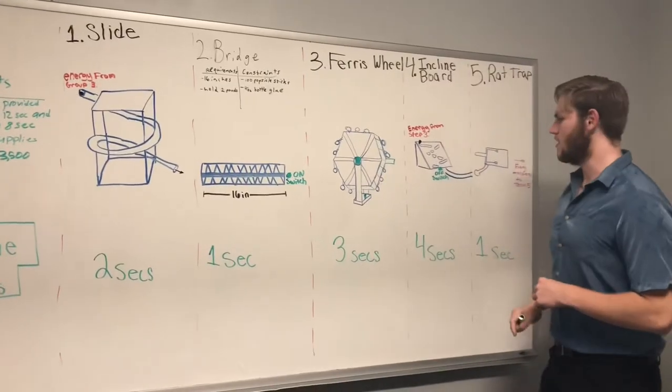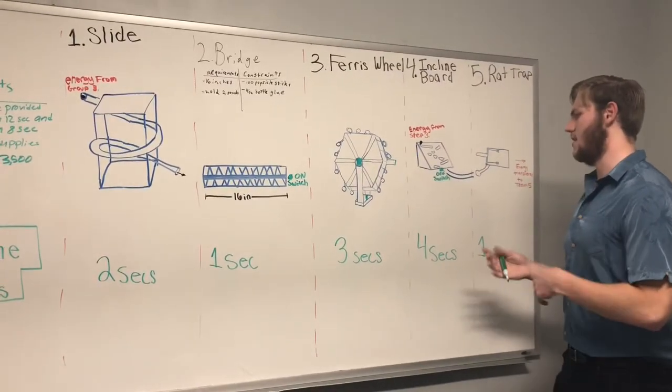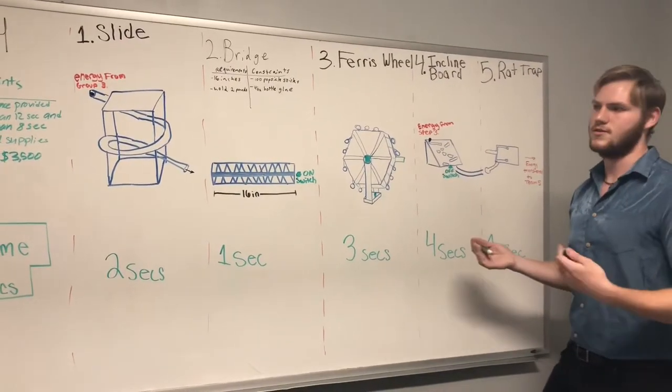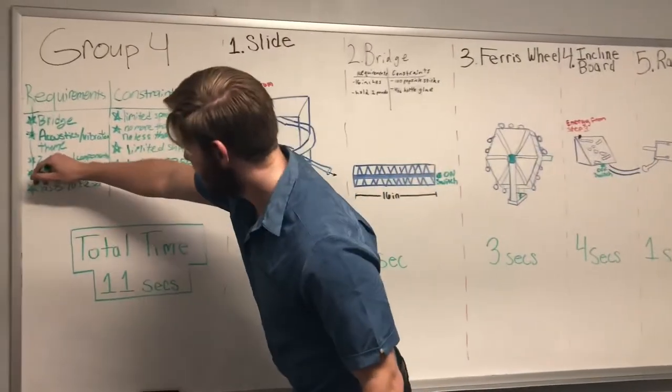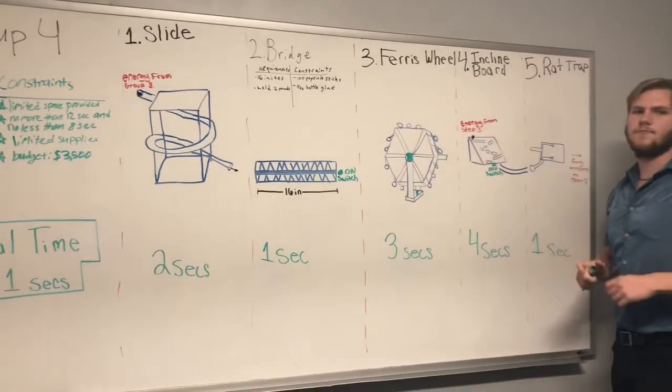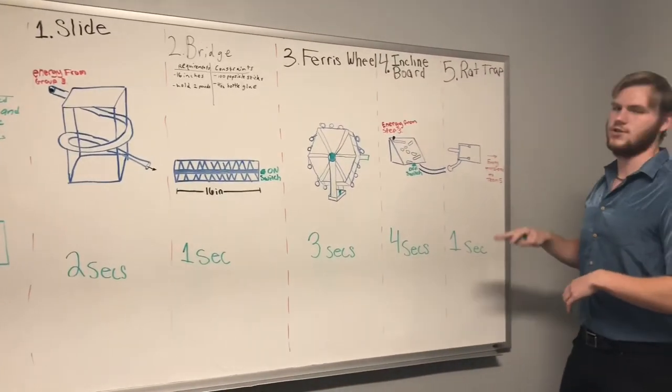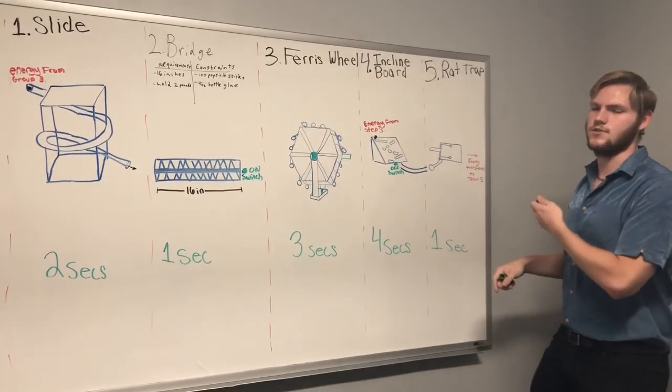And then, in Step 4, this was mainly what we used to fulfill our time requirement, so it would last the 10 seconds. And then, in Step 5, we have the rat trap, which allows us to easily transfer energy to Group 5.